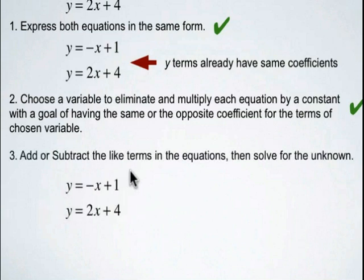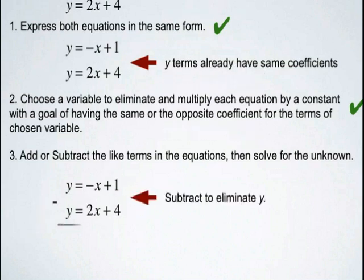Now we're going to add or subtract the like terms in order to solve for the unknown. Since the coefficients are the same, we're going to subtract to eliminate y. If the coefficients are opposites, we're going to add. If the coefficients are the same, we subtract. So we're going to subtract these two equations and then check your solution.